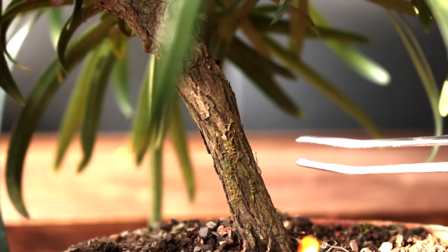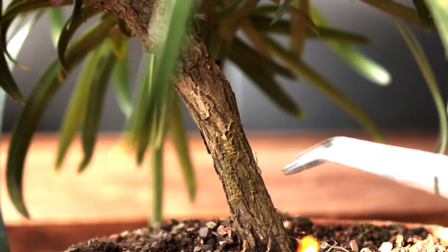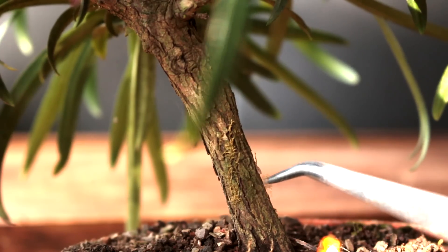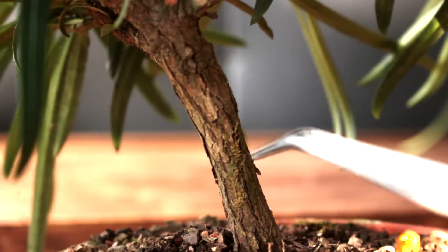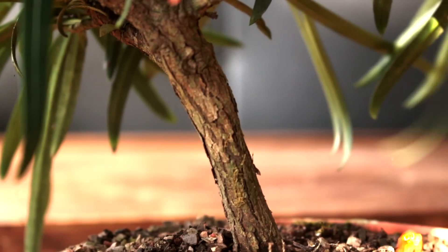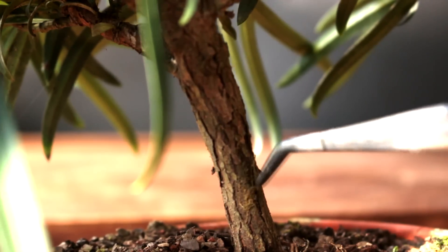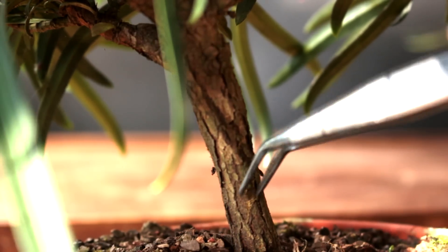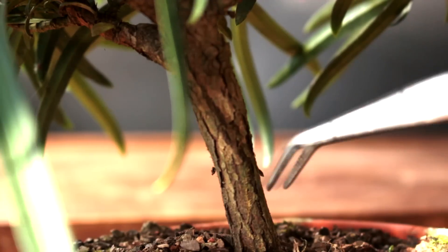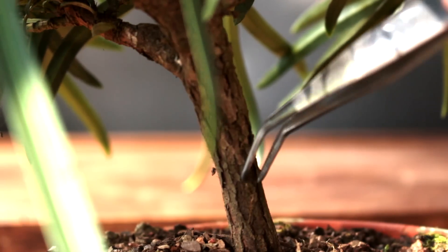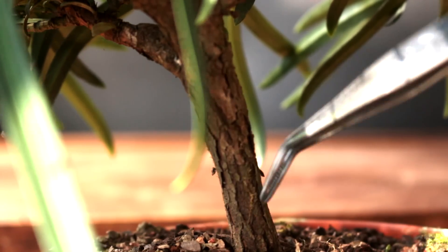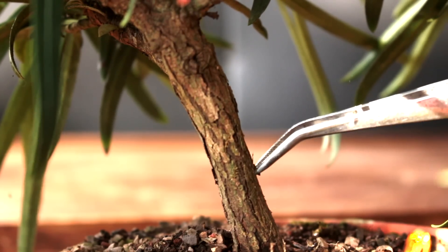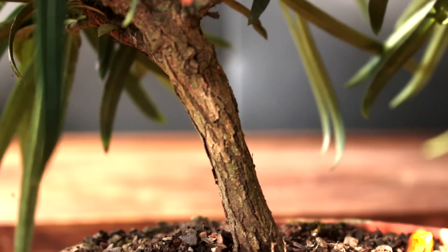In the close-up here you can start to see some of the nice texture forming on the trunk. There's also a bit of moss I'm going to remove, some old dried up moss on the trunk. You want to see the texture of your bark, not moss growing up your trunk. That looks better.